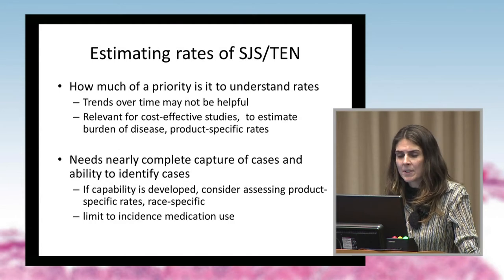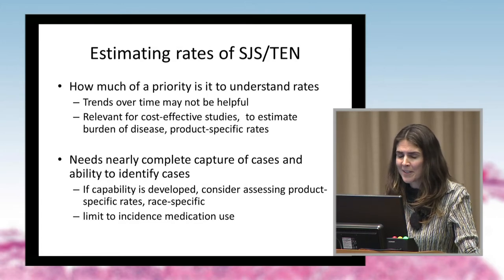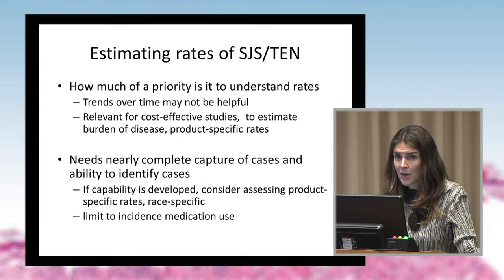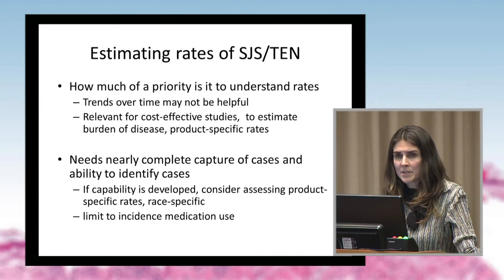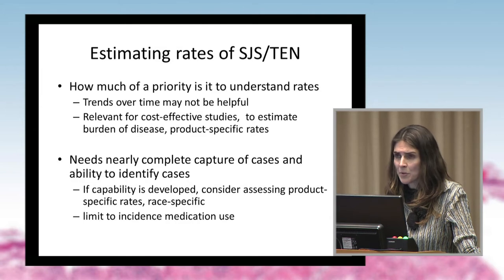We also talked about challenges in estimating rates of SJS and TEN, which is an issue of particular importance for the U.S. One of the issues discussed is whether this is truly a priority — whether we need to understand rates. For an event as rare as SJS and TEN, trends over time may not be that helpful. But this is probably very relevant for cost-effectiveness studies, to estimate burden of disease and to calculate product-specific rates, which would require near-complete capture of cases and the ability to enumerate a population.